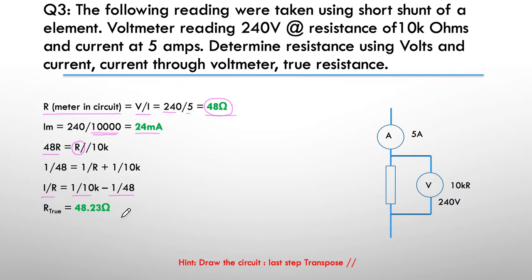1 over R has got to equal 1 over 10k minus 1 over 48. I simply work out what the inverses are, subtract them, and invert it back. The true resistance value is 48.23 ohms.